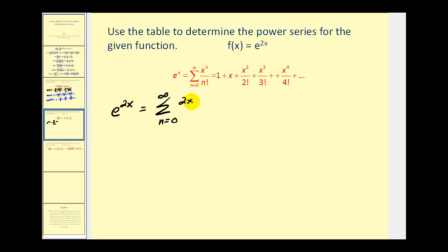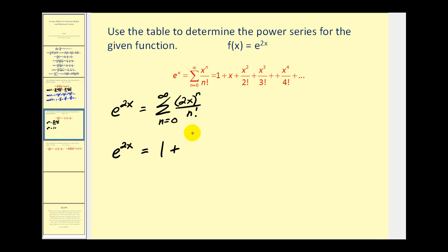So we'll have two x to the n divided by n factorial. To find the first several terms of this power series, we could use this formula, or we could just replace x with two x in the expanded form of the power series. Let's try that: we'll have one, plus two x, plus two x squared divided by two factorial.